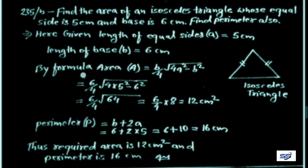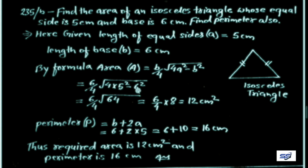By formula, the area of an isosceles triangle is A = (b/4) × √(4a² − b²). Substituting b = 6 and a = 5: A = (6/4) × √(4 × 25 − 36) = (6/4) × √(100 − 36) = (6/4) × √64 = (6/4) × 8 = 12 cm². This is the area of our isosceles triangle.